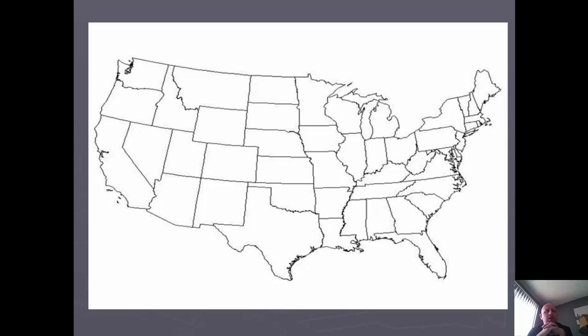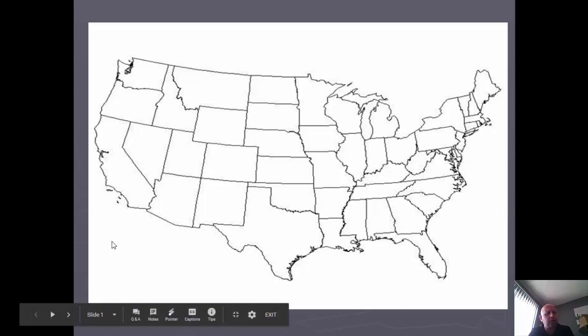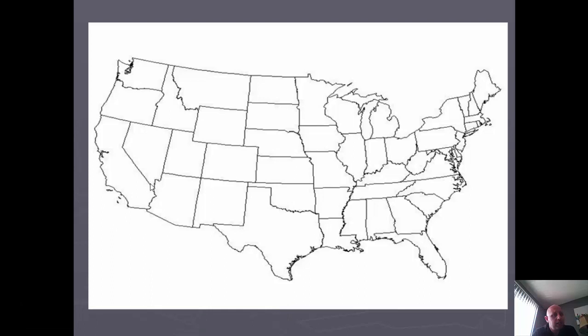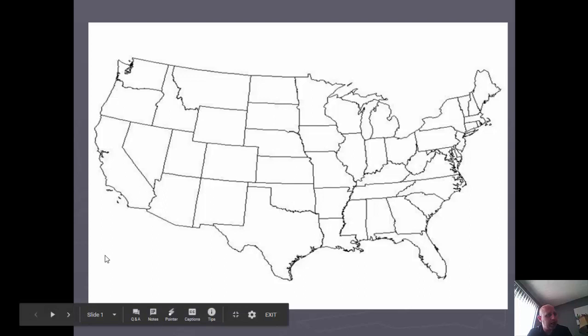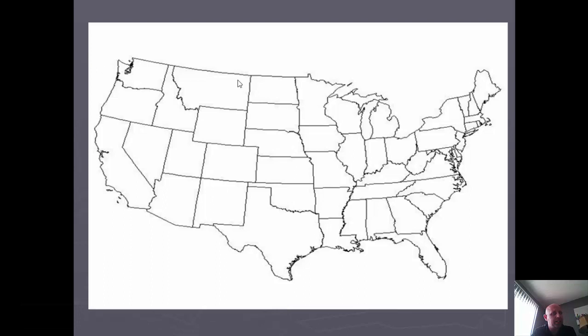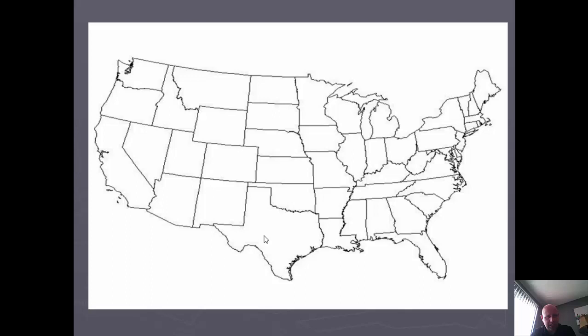I want you to start by thinking about a map of the United States. If I asked you to draw a circle around what you consider to be the West, what would that be? Would it be the West Coast — the three Pacific states? Does Alaska and Hawaii get included? Maybe your West is larger than that. Maybe it includes the Mountain West, Nevada, Arizona, or all the way over to Texas. The whole point is you're going to have different definitions or interpretations of what that means, and that is an excellent way to start thinking about regions in human geography.